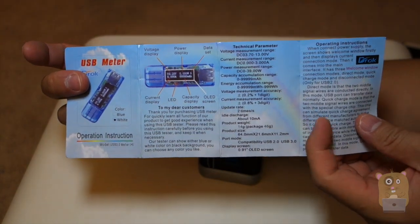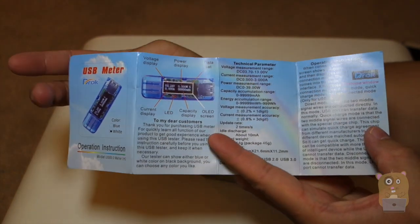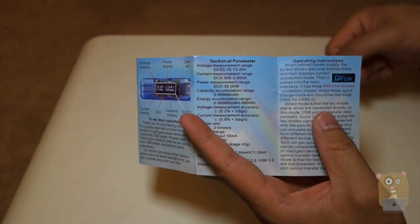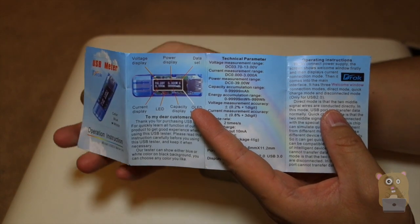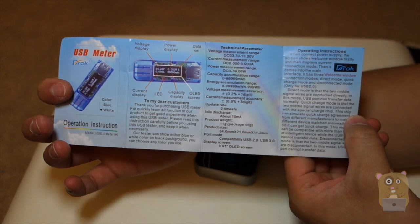This here is the technical parameters. This is an improvement over their previous USB 3.0 multimeter because of the DC range. This one is 3.7 volts to 13 volts, so it's USB 2.0 or USB 3.0.